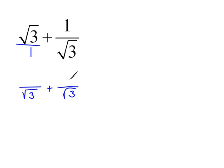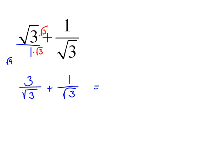Our second fraction already had the common denominator, so we don't have to change that to an equivalent fraction. Our first one, though, in order to make this a square root of 3 on the bottom, we had to multiply by the square root of 3. So we have to do the same thing to the top, just like we always have with fractions. The square root of 3 times the square root of 3 is the square root of 9, which is 3. Now that we have a common denominator, we can add the numerators. So this would be 4 over the square root of 3.